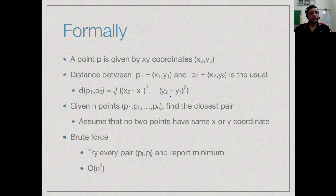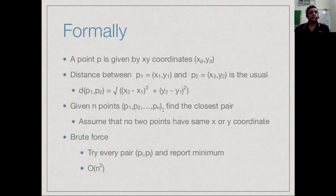Our target is: given a set of n points p1 to pn, to find the closest pair among them. For the analysis of the algorithm, it will be convenient to assume that no two points in this set have the same x or y coordinate — so every x coordinate is different and every y coordinate is different. The algorithm can be extended to handle the general case, but that would unnecessarily complicate the understanding, so we solve this special case.